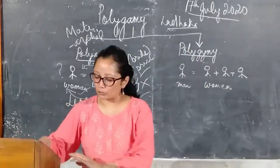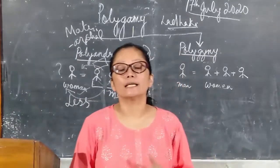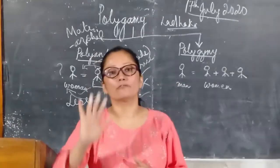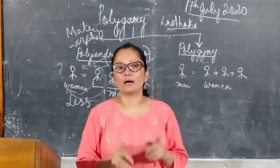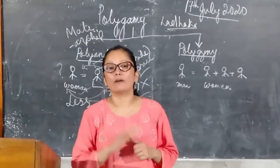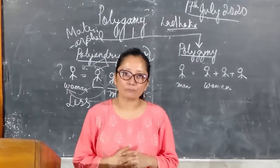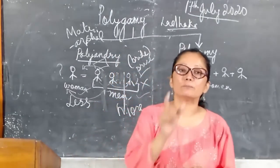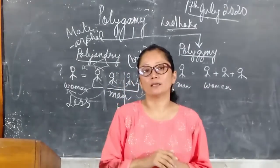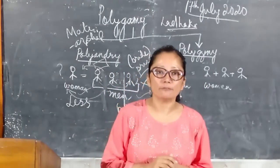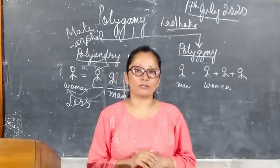So dear children, I hope you have understood the explanation. Polygamy comes in the long answer section for five marks in ISC, where you have to discuss the entire topic of polygamy. Differentiating between polyandry and polygyny comes for two marks in the objective section. With this, I end my lecture today. Thank you very much for watching.